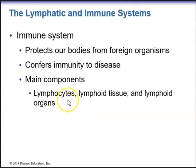Lymphocytes are the cells. We all know what lymphocytes look like from Unit 1. Those are the round cells, very small cells, that look like a fried egg with a very large centralized nucleus that looks like the yolk of an egg and a very small rim of cytoplasm. Other main components of the immune system include lymphoid tissue and lymphoid organs.